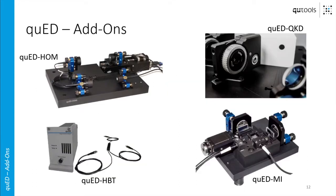Let's now talk about the add-ons that expand the suite of experiments. We have at the moment four complete add-ons: the first being the HOM setup, then the HBT add-on, a Michelson interferometer, and also an add-on for quantum key distribution where you can perform the BB84 protocol.